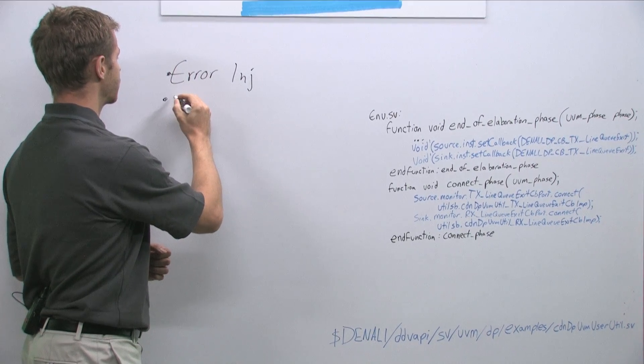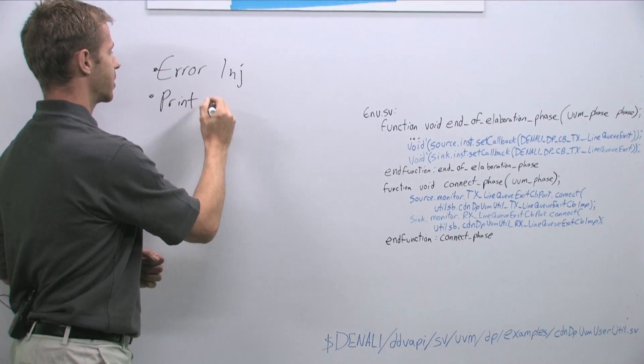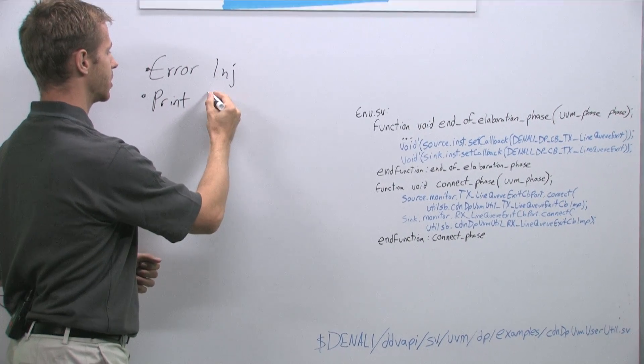Another thing that you can do with callback functions is print extra transaction information that you might want to have printed to the log files.